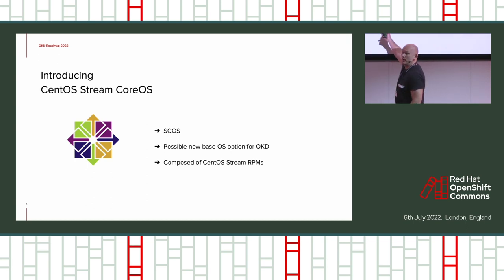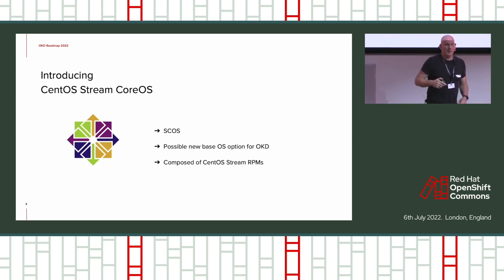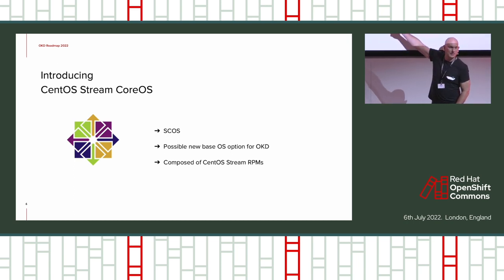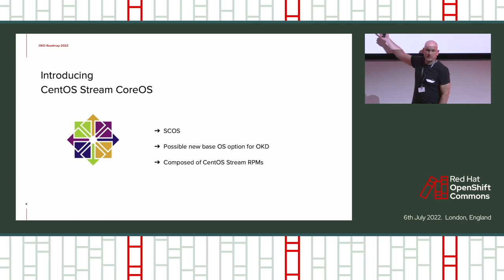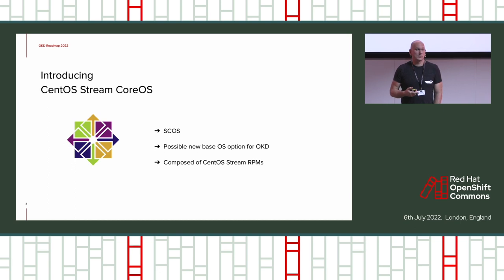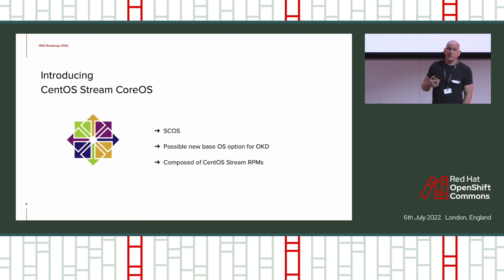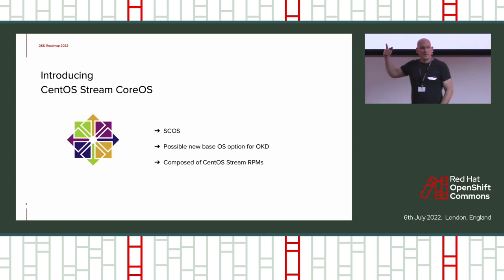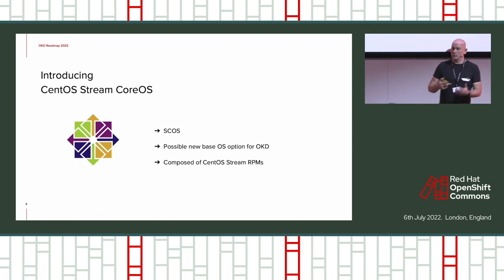At the minute, there isn't a CoreOS for CentOS Stream, but CentOS Stream is the halfway point between Fedora and Red Hat Enterprise Linux — you can think of it as what the next version of Red Hat Enterprise Linux is going to be. What Red Hat are doing is creating a CoreOS on CentOS Stream, called SCOS, and it's going to be created just for OKD, just like Red Hat Enterprise Linux CoreOS is created just for the container platform.